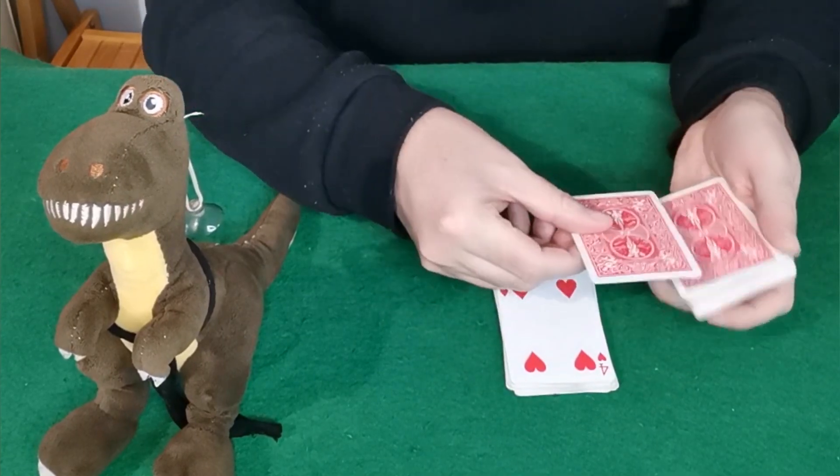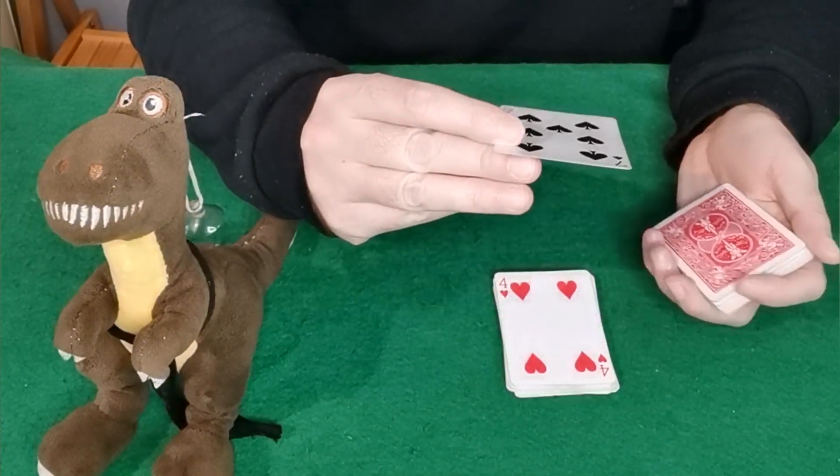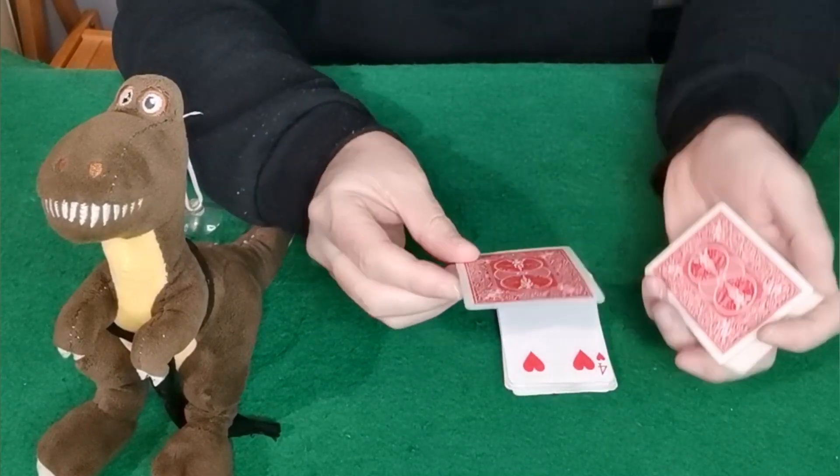Now you'll tell them that this very next card is going to be their card and you'll show them the card and it's going to be the seven of spades. Now I'm going to keep this simple.